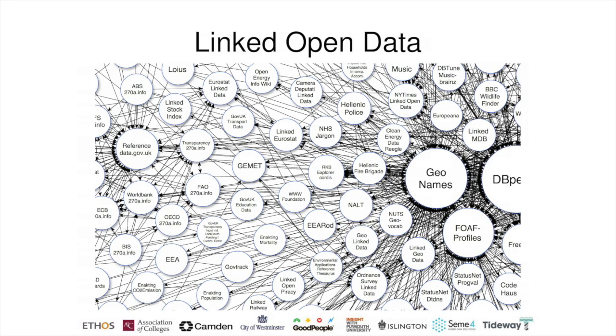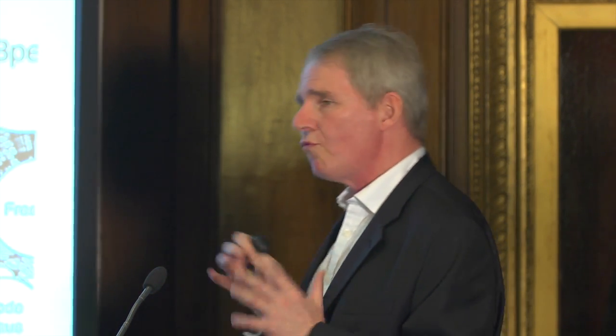It's being realised. There are already billions and billions of facts out there that are connected in what we call the linked web of open data. This is a particularly interesting part of the web because the data is there for anybody to reuse. It contains things like a comprehensive set of all the geographic place names on the planet — not all of them, but a lot of them — open to use with an open licence, or indeed a whole range, increasingly, of government data.